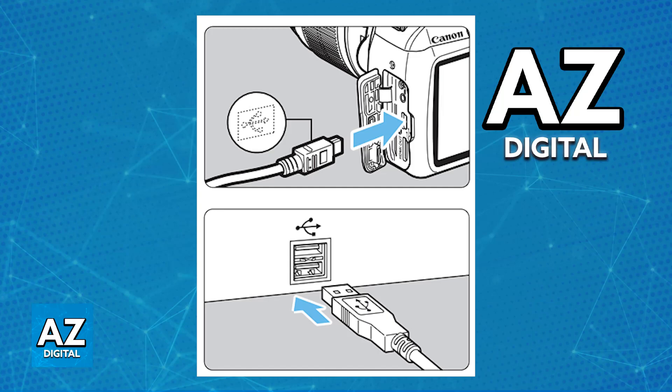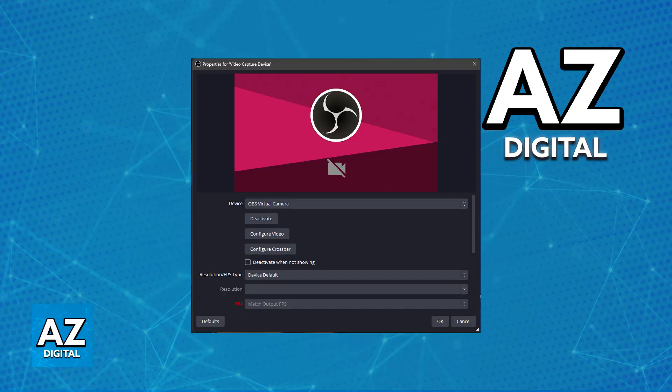Once you have the device and the camera connected, power it on and first I would recommend that you check the camera sources available. If you open something like OBS, Google Meet, or Zoom, try to see if it is already working right away. If it isn't working, don't worry — this is standard, and what you will have to do then is download an additional tool.